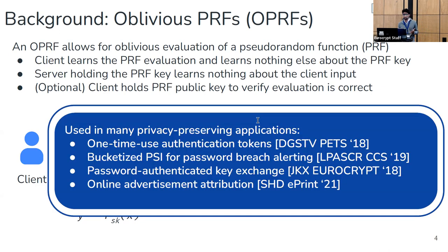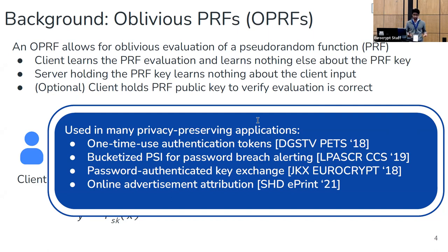This OPRF primitive has become quite popular and has found homes in a bunch of different applications, with several starting to be deployed at large scale by companies like Google, Facebook, and Cloudflare. Examples of large-scale deployments include one-time use tokens for authentication, bucketized private set membership, password breach alerting, the OPAQUE system for password-authenticated key exchange, and recent proposals for next-generation online advertisement attribution. Because of all this interest, the IETF has begun standardization of a particular construction called 2-hash-DH, which is basically universally used across all deployed applications.